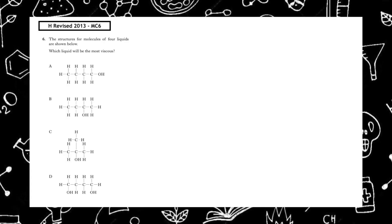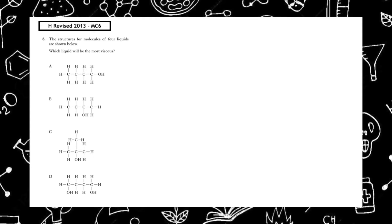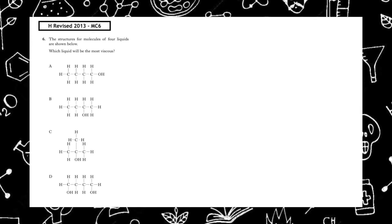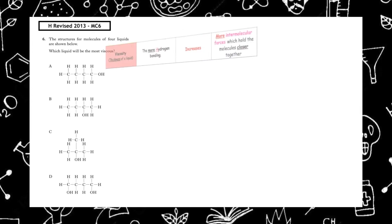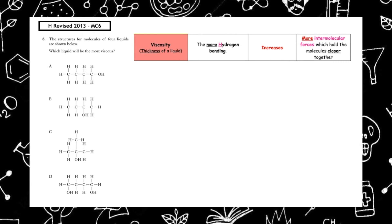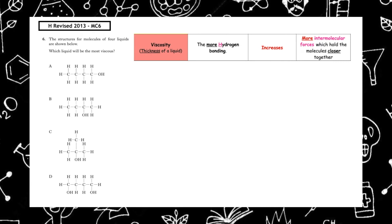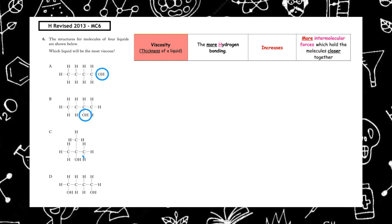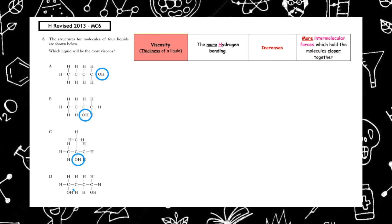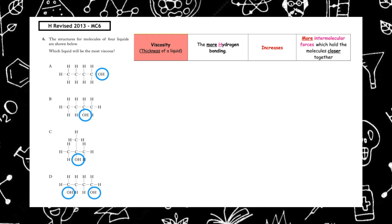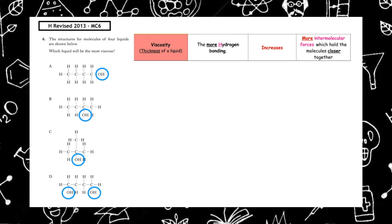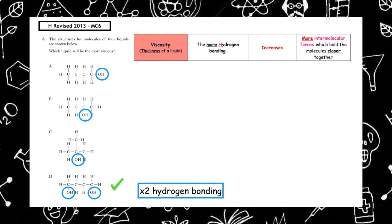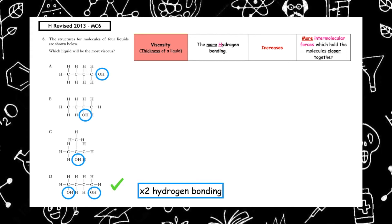This question is from The Higher, revised 2013, multiple choice 6. Four liquid structures are shown. Which liquid would be the most viscous? Remember, viscosity is the thickness of the liquid, and that's due to the quantity of hydrogen bonding. More hydrogen bonding means more intermolecular forces holding molecules together, making the substance more viscous. We identify the number of hydroxyl groups in A, B, C, and D. Option D has two sets of hydrogen bonding, so therefore this will be the most viscous.